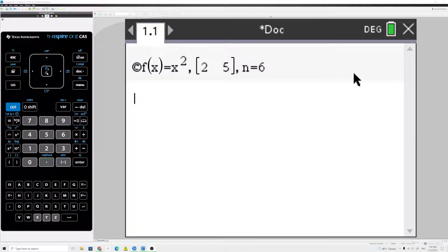Okay, we're going to find an approximation of the area under the curve f of x equals x squared on the interval 2 to 5 using six rectangles, and we're going to use the right endpoints of the subintervals. So we're going to find the right Riemann sum using six rectangles.